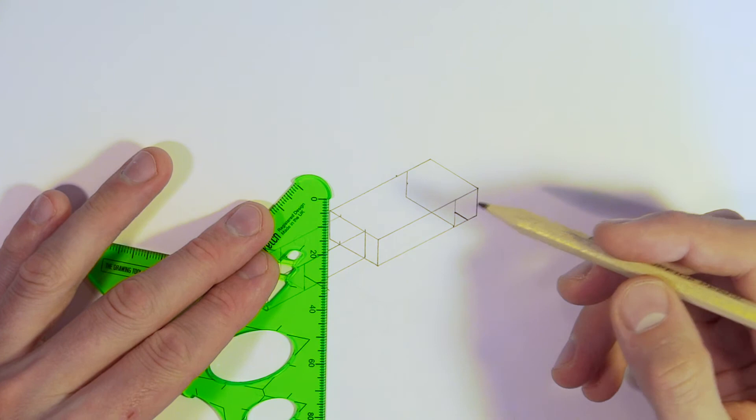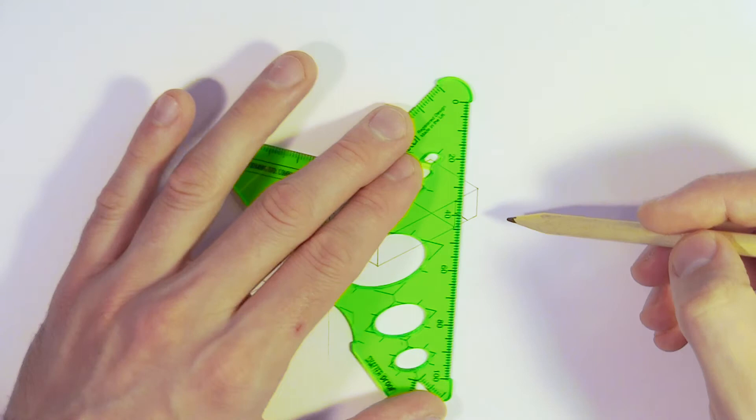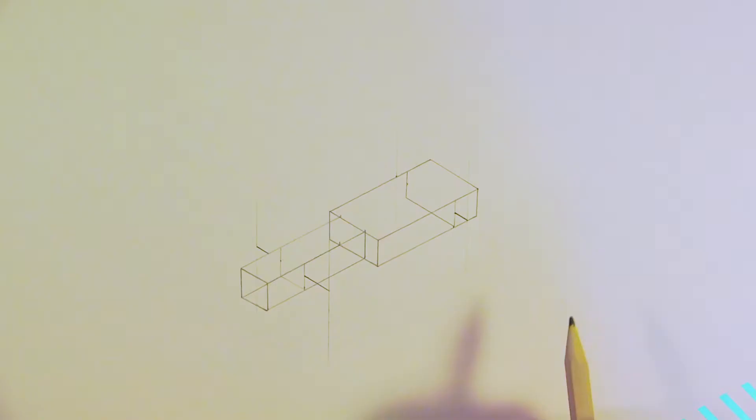Now all that's left to do is mark on where our wheels are going to go. So just gently with the pencil, I'm going to mark on a vertical line. Vertical means it goes from top to bottom on the page. Just being careful to make sure that that line is straight up and down.